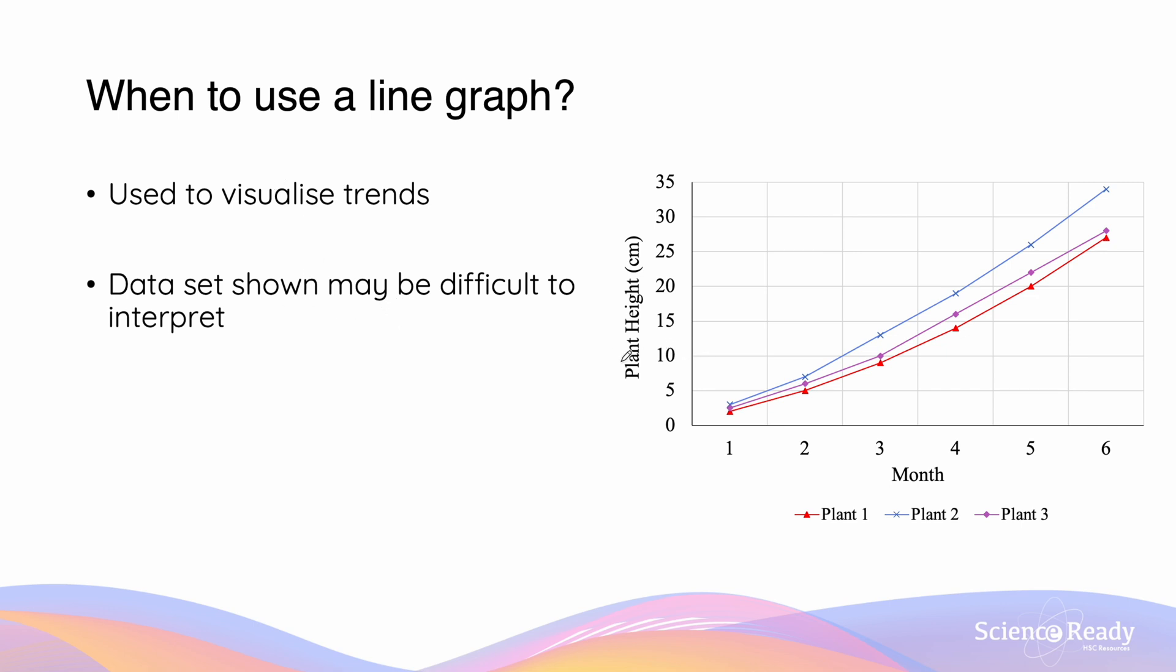This is similar to the scatter plot, however, you can notice that we have dotted the dots. We use line graphs to help visualize trends since the given data may be difficult for us to interpret. So this line graph is going to show us the trend of the data over a period of time, where we see throughout the months both plants one, two, and three are getting larger in size.